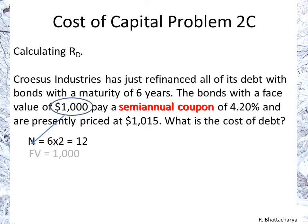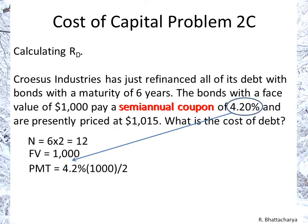The face value of $1,000 may not always be given in a question, but if it's not given you can pretty much assume it's $1,000. Now with the semi-annual coupon of 4.2%, that translates to a payment of 4.2% of $1,000 — the face value, not the price — divided by two, because you'll be receiving $21 twice a year, not $42 once a year.